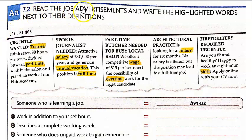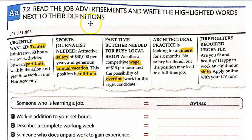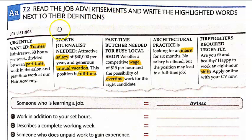In 7.2, read the job advertisements and write the highlighted words next to their definitions. So you have 1, 2, 3, 4, 5 job advertisements or job listings. Go ahead and pause the video so you can read the job listings.